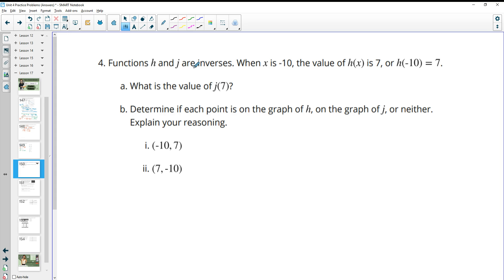Number 4, functions H and J are inverses of each other. X is negative 10. And when X is negative 10, the value of H of 10, the value of H of X is 7. So H of negative 10 equals 7. So if we wrote this as an ordered pair, it'd be the ordered pair of negative 10, 7. So plugging in negative 10 gets us back 7 for our H function. So what's the value of J? Well, if they're inverses, this is reversed. So we put in negative 10, we got back 7. The inverse, if we put in 7, we get back the negative 10. So for J, when we plug in 7, we get back negative 10.